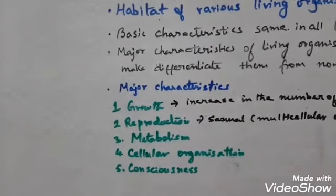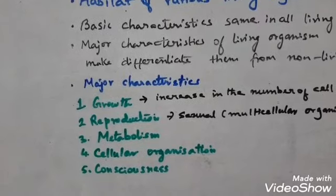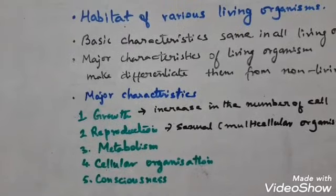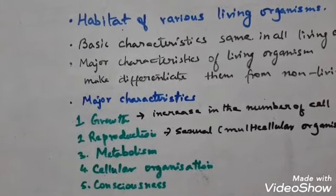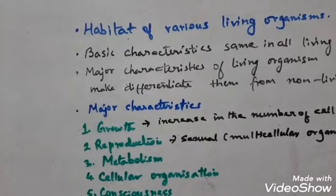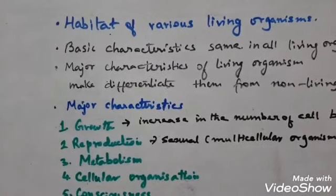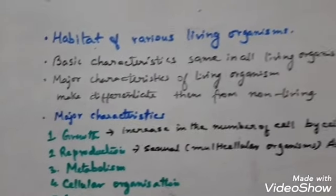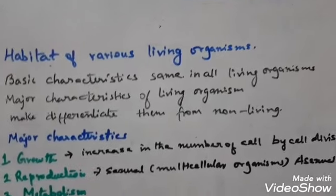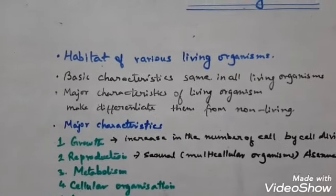The first characteristic is growth. Growth is the increase in the mass or increase in the number of cells of an individual. In a multicellular organism, growth occurs by cell division — that is, an increase in the number of cells.